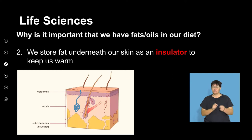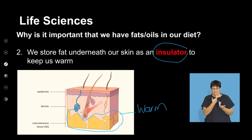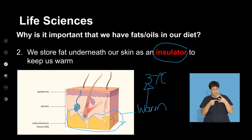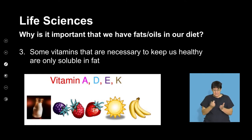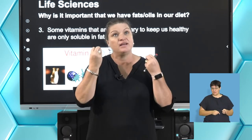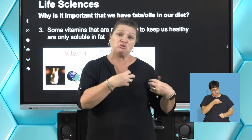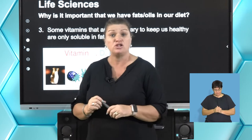Second, very important: the word insulator. Where do we store fat? Underneath our skin — we need to have a fat layer. What is an insulator? It keeps us warm. We've got to keep our body temperature at around about 37 degrees. Also, some vitamins dissolve in the fat in our body — fat-soluble vitamins — and that means we don't need to eat as much of that vitamin all the time. We store it in our fat and our body stores them.